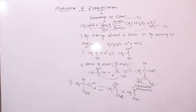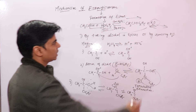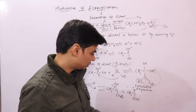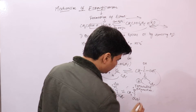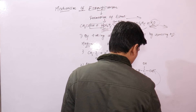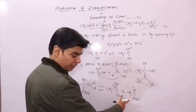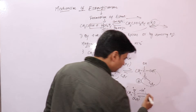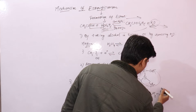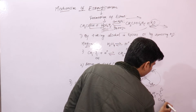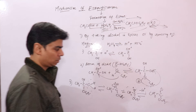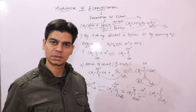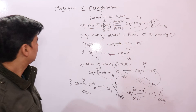This intermediate is the protonated ester, analogous to the protonated acid formed earlier. The protonated ester then loses a proton to form the final ester product. So these are the key steps for the mechanism of ester formation: protonation of the acid, nucleophilic attack by alcohol forming a tetrahedral intermediate, proton shift, water leaving, lone pair forming a double bond, and finally deprotonation to give the ester.